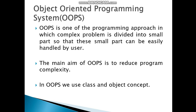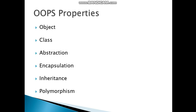Now, what is OOP? OOP is a programming paradigm in which complex problems are divided into small parts so that each small part can easily be handled by the user. The main aim of OOP is to reduce program complexity. In OOP, we use class and object concepts. What are the properties of OOP?